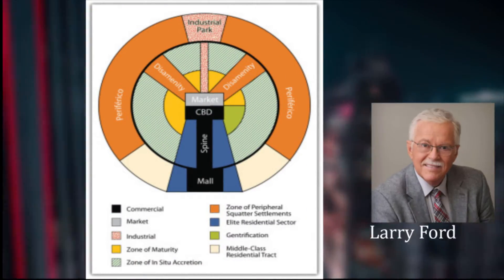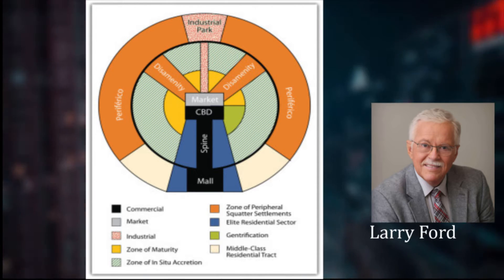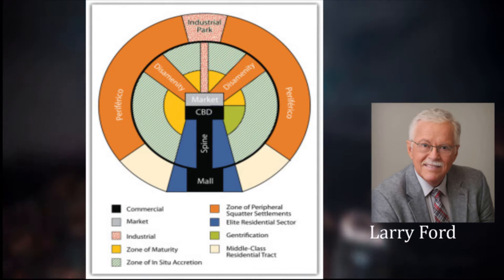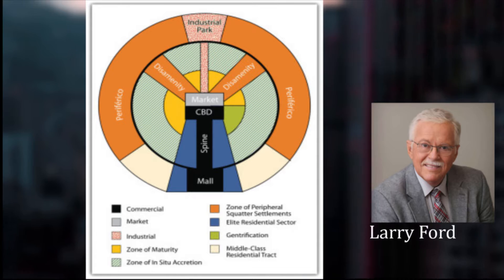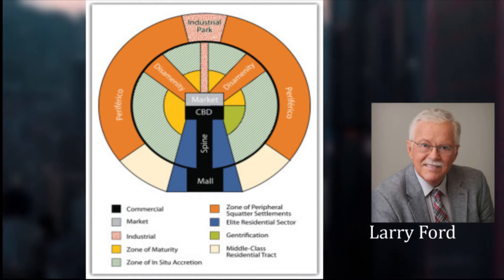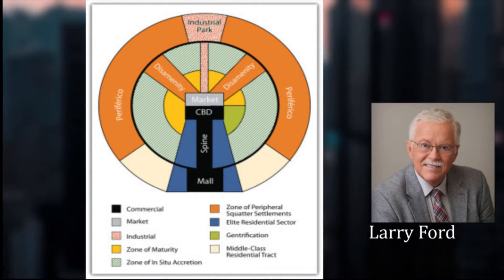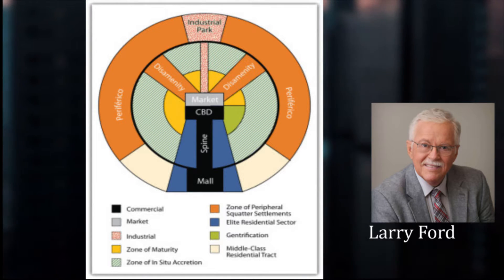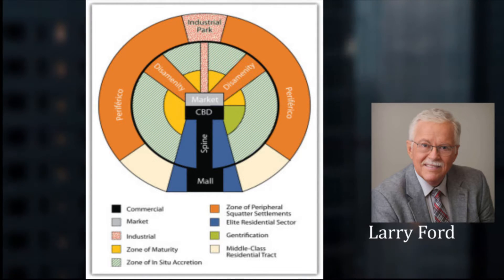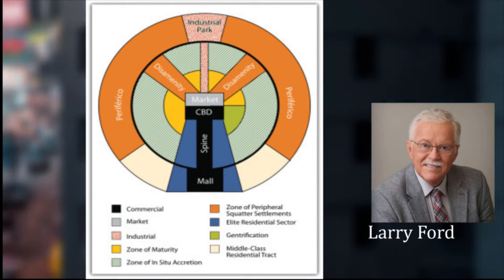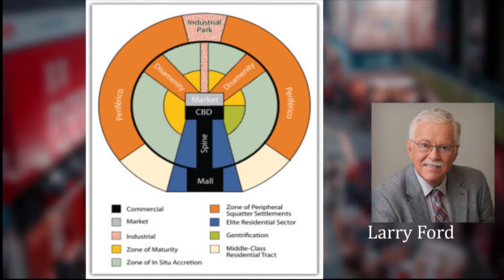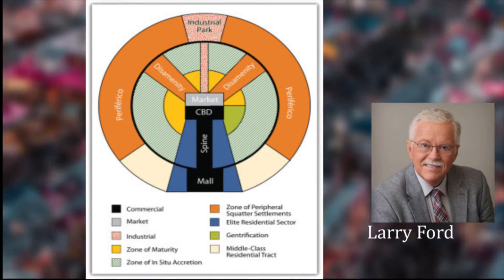Another example is urban land use in developing countries. Take Latin American cities, in which the CBD has developed around its colonial core and there is a commercial avenue extending from it. Generally, the wealthy live close to the city center, whereas the very poor are more likely to be found on the periphery. As a result, better quality land is occupied by the wealthy, making segregation by wealth, race, and ethnicity more evident. Manufacturing is commonly scattered throughout the city.